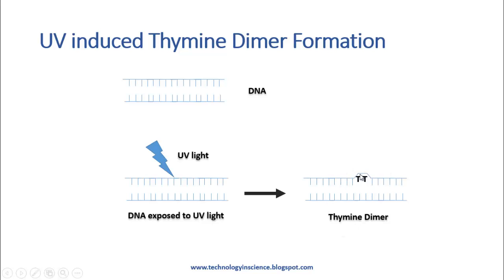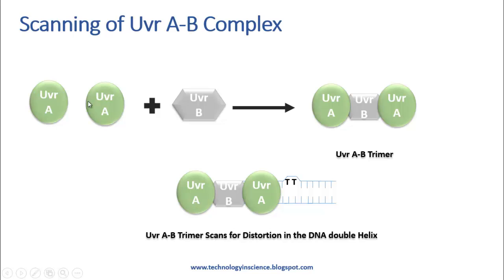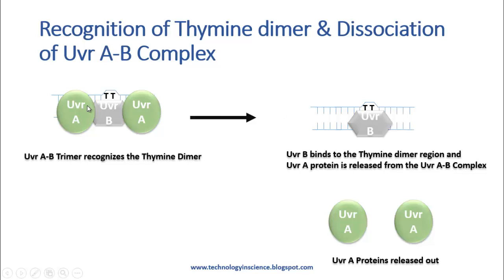Thymine dimer formation causes distortion of the DNA strand. The role of UVRA and UVRB is to scan through the DNA double helix and look for any kind of lesions or structural variations present. This structure is formed by the combination of UVRA and UVRB, which forms a UVRAB trimer. This trimer complex scans through the DNA double helix looking for any types of distortions, and stalls when a lesion is present.